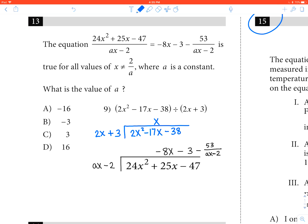So that process of 2x times x equals 2x squared, we're just going to do that a little differently here. We know that ax times negative 8x has to equal 24x squared.